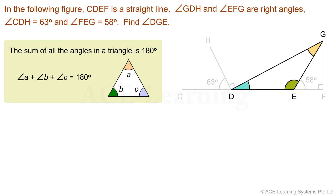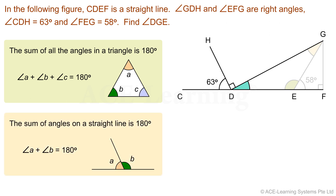How do we find the angle measurements of angles EDG and DEG? Take a look at this set of angles. These three angles are angles on the straight line CDEF. Recall the property: the sum of angles on a straight line is 180 degrees. Angle EDG is one of these angles, and there is another set of angles on straight line CDEF where angle DEG is also found.